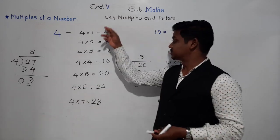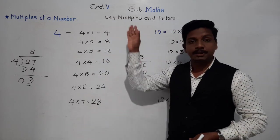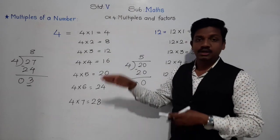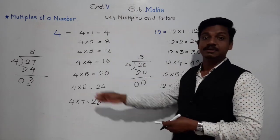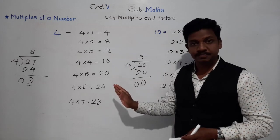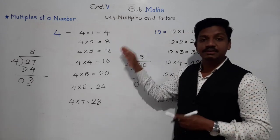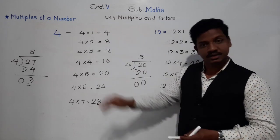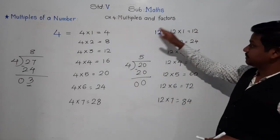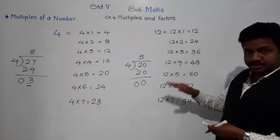So, multiples have two definitions: the numbers which come in the table of the given number, or the numbers which are divisible by the given number. Any number from the multiples list of 4 will be divisible by 4. Similarly, the multiples of 12 come in the table of 12 and are divisible by 12.